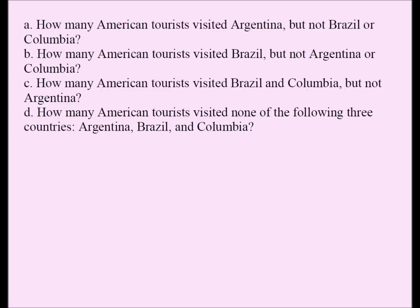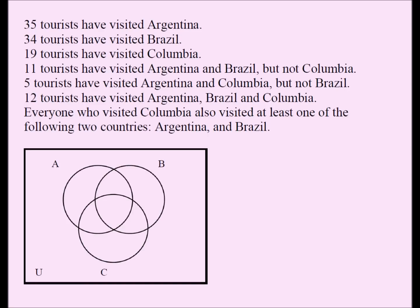We're going to use a Venn diagram to solve this problem. A stands for Argentina — these are the people who visited Argentina. B stands for Brazil — these are all the people who visited Brazil. C stands for Colombia — these are all the people who visited Colombia.